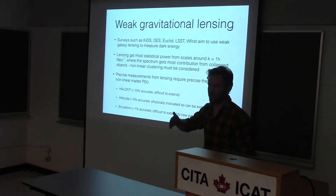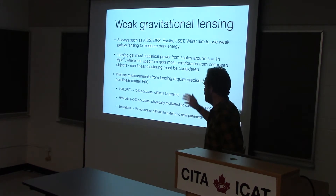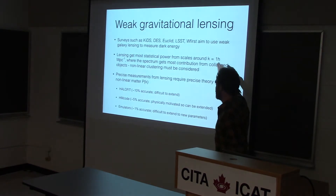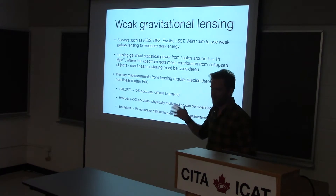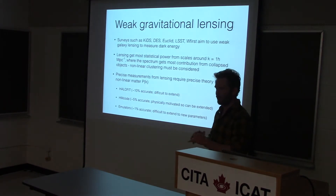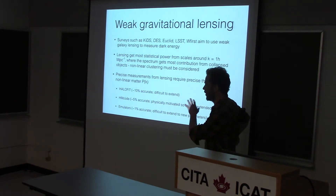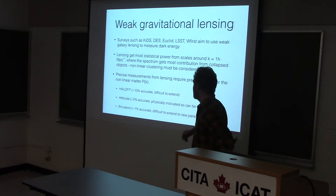For example, dark energy might make perturbations grow more quickly or more slowly, and therefore we can learn about dark energy by doing this weak lensing. It gets most of its power from small-ish scales, around K of 1. If you think about what that translates to physically, it's like 2π over 1, corresponding to the typical distance between clusters. These are quite nonlinear scales, which is why we need to worry about this — we're not just thinking about linear perturbation theory.